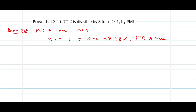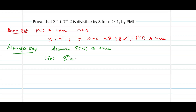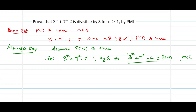The next step is the assumption step. We assume that the statement is true for n equal to k — that is, 3 to the power of k plus 7 to the power of k minus 2 is divisible by 8. In which case, we can express 3 power k plus 7 power k minus 2 as 8 times m, where m belongs to the set of integers. This is our assumption, which we will use in the induction step.